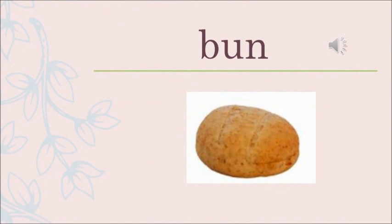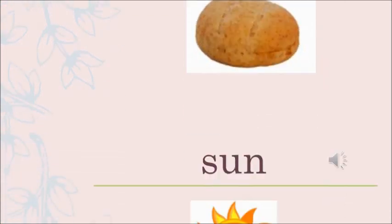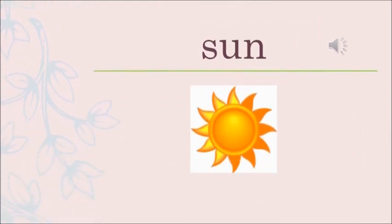Now the next word is buh un bun. Bun is a type of food — like bread, we have bun the same way. Next one is sun. Suh un sun. Sun we know it's in the sky and it gives us bright light. It's a heavenly body. So the word is suh un sun.